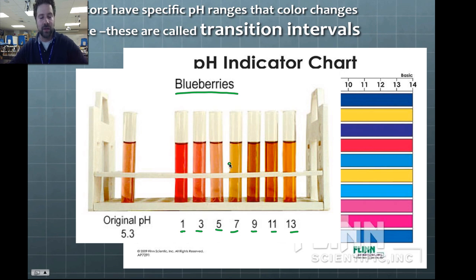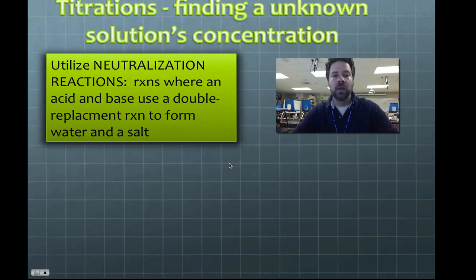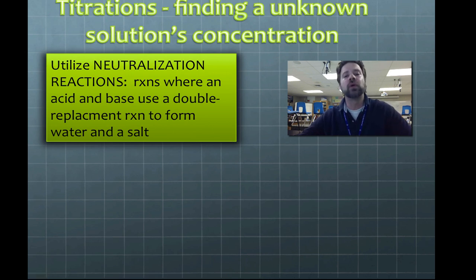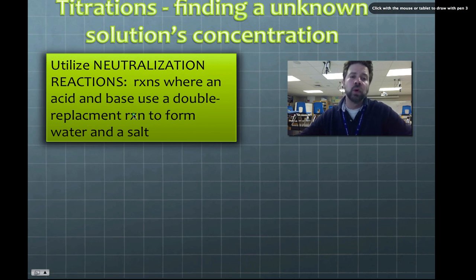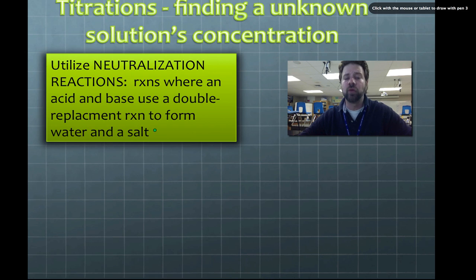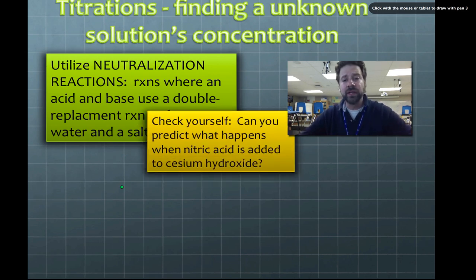So what is a titration? The whole goal is to find an unknown solution's concentration. We use a neutralization reaction — an acid and a base undergoing a double replacement reaction to form water and a salt.